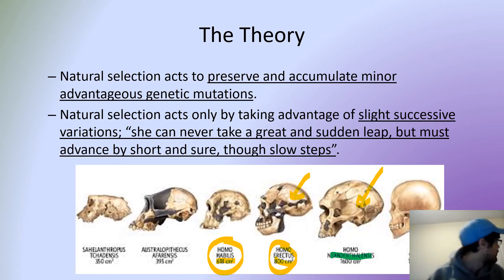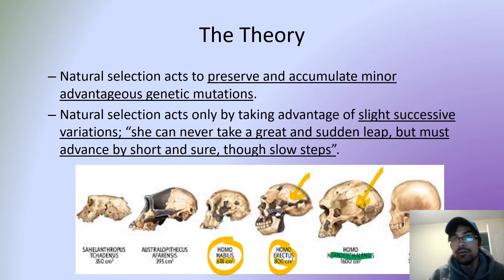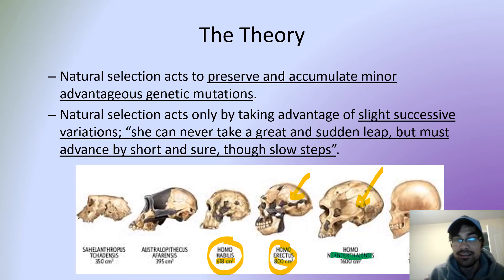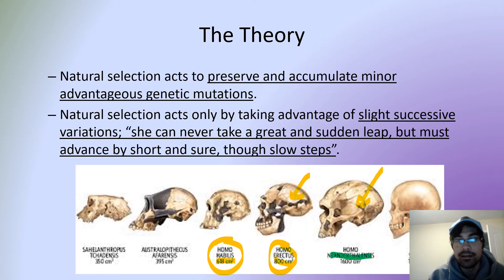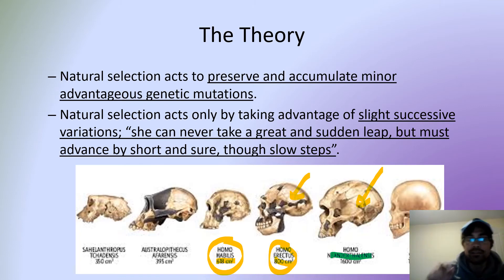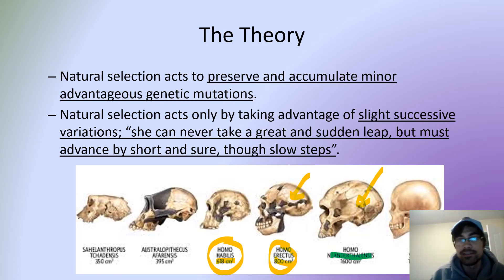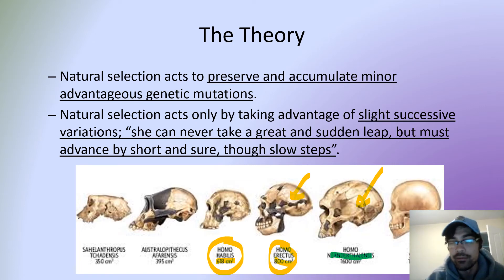The skull size would have gotten slightly larger over time, a few volume units at a time. The ones with the bigger skull perhaps had a bigger brain, and with a bigger brain they had certain advantages that allowed them to survive longer. That would have just continued on and on. The idea is that it takes a lot of time — not one or two generations, but several hundreds of generations for these changes to accumulate.